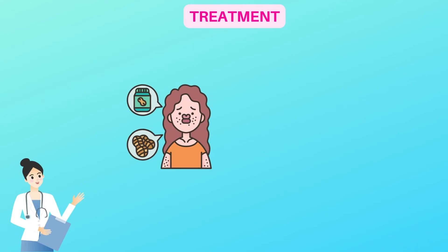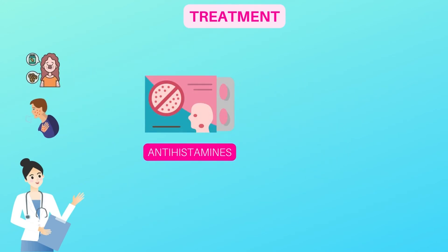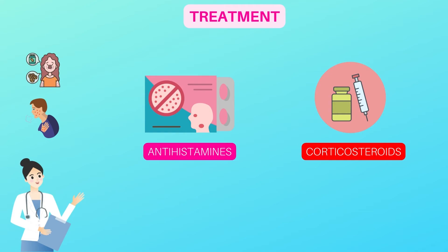The treatment of angioedema depends on its cause and the severity of your symptoms. Often it's treated with medicines called antihistamines. You may also be given corticosteroids. These are medicines that reduce swelling.